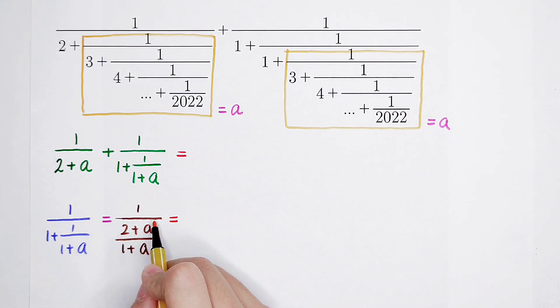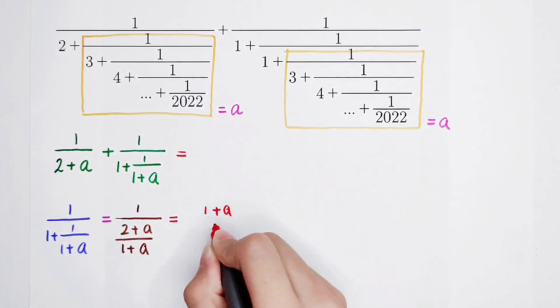And the numerator is 1 plus a plus 1 is 2 plus a. Now, because this is the main fraction line and the denominator is this and the numerator is just 1, so the value of this is just change the order of 2 plus a and 1 plus a. 1 plus a over 2 plus a.